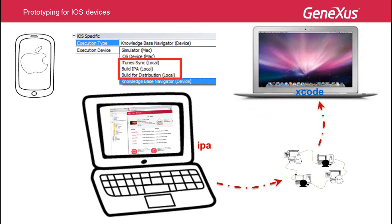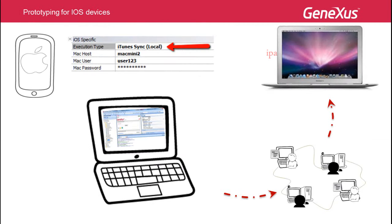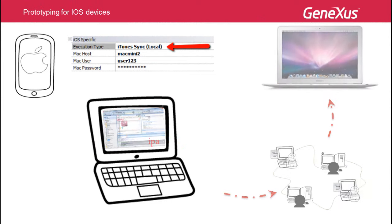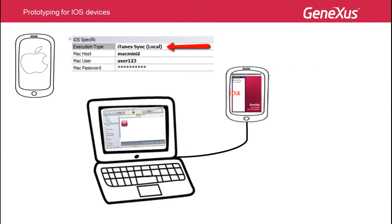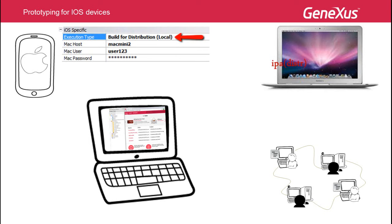The output window of the GeneXus IDE shows where the file will be copied. For iTunes Sync, after the IPA package is copied to the development computer, iTunes is automatically opened to show the application in its catalog so it can be installed on the device connected via cable. For Build IPA, the compiled application is copied to the GeneXus model folder without opening iTunes. For Build for Distribution, the application is compiled on the Mac using the distribution signature and the IPA file is copied to the GeneXus model folder.